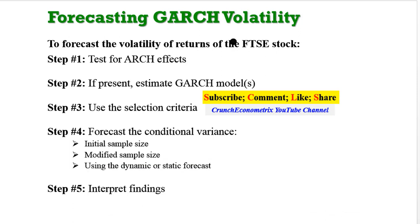We will forecast the volatility of returns of the FTSE stock. First, test for ARCH effects — if present, estimate a GARCH model or several GARCH models using different error specifications. Then select the best model using the criteria indicated in the previous video under diagnostics. From the selected model, forecast the conditional variance.